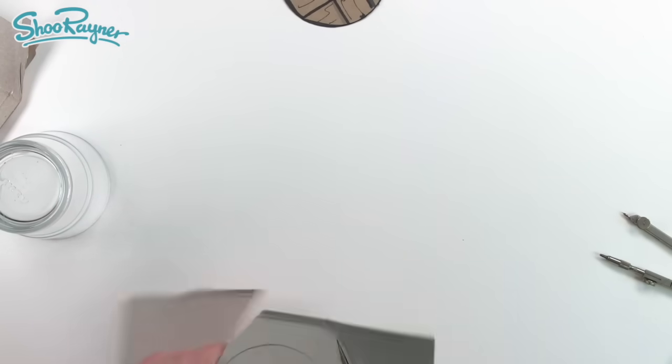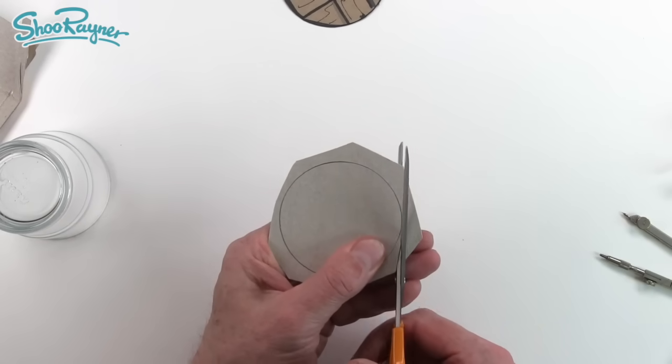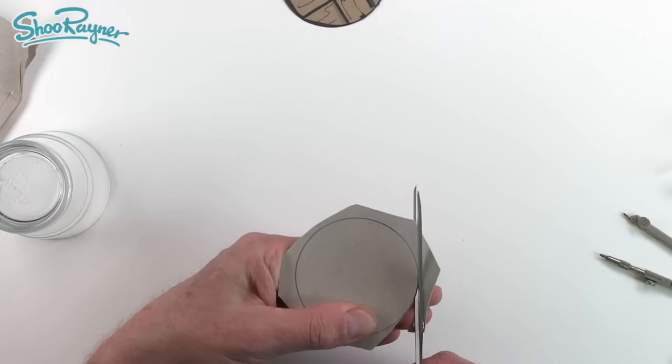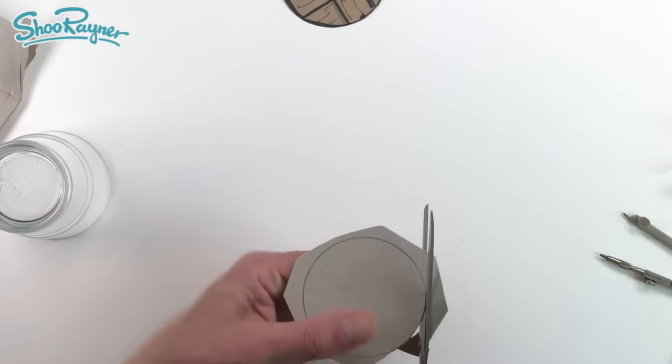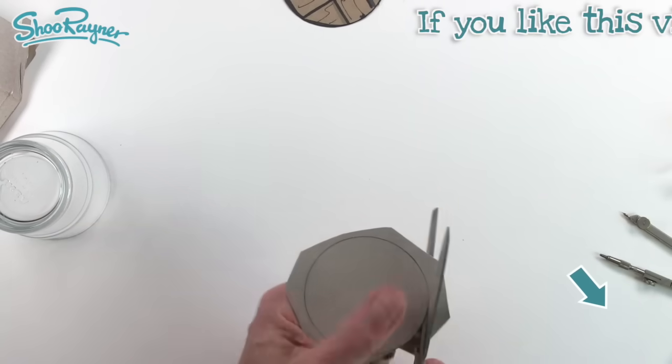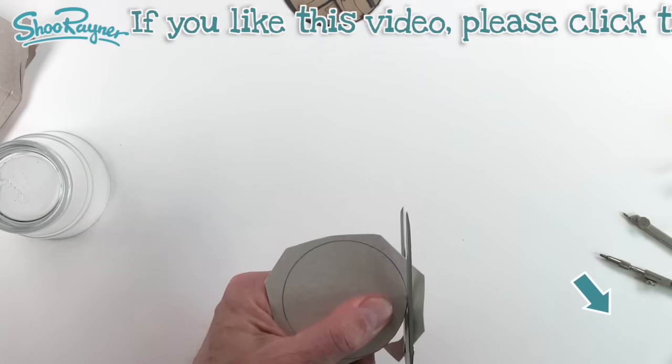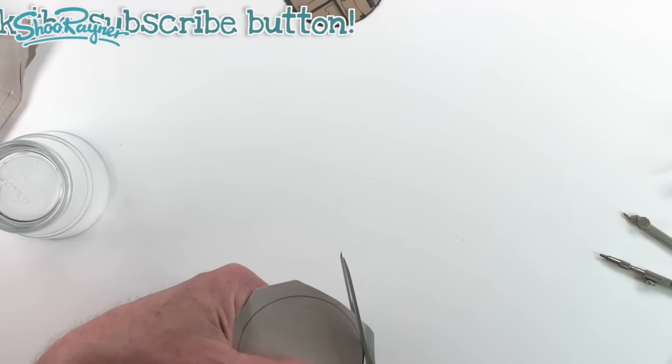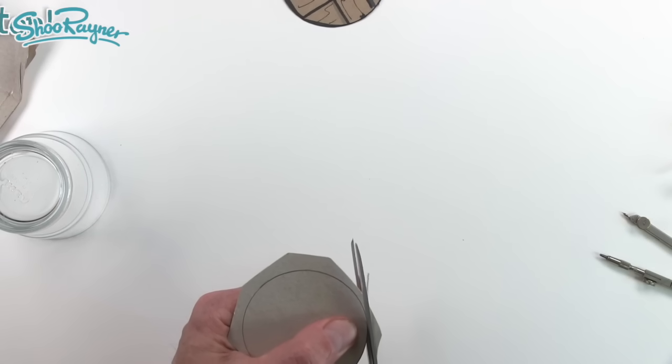I'm going to cut this out roughly first and then I'm going to cut it out very carefully following around the circumference of the circle. And while I'm doing this, come down here you'll see a little subscribe button. If you click that you will be subscribed to the Shoemaker drawing channel and when you do there'll be a little bell comes up, ring that and you'll be notified every time I do new videos.